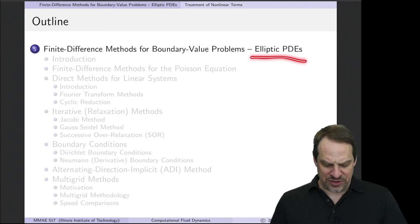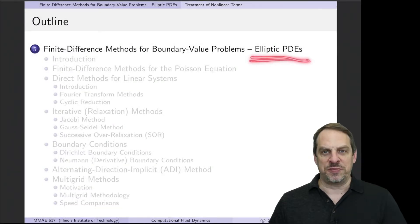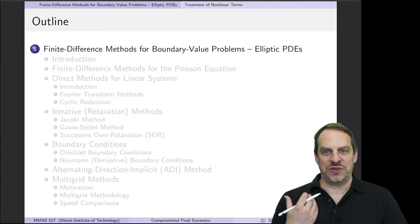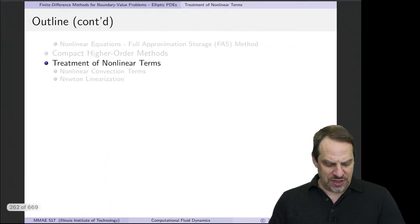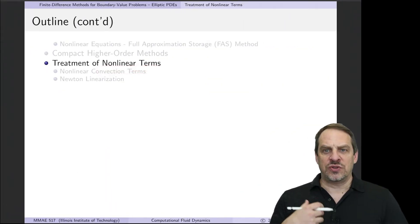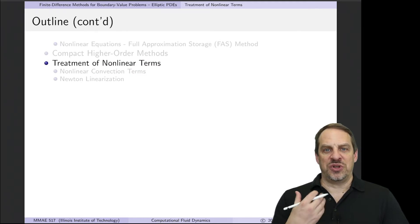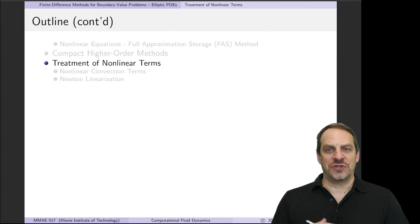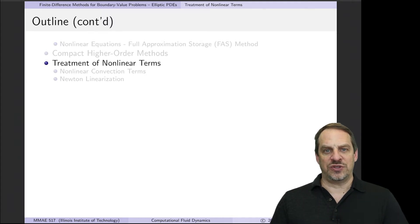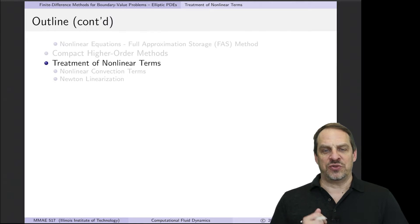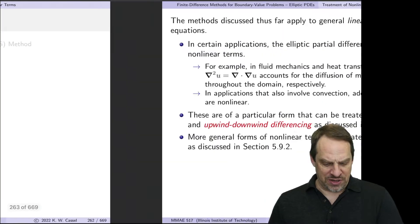We have one last topic in our discussion of how to solve elliptic PDEs using finite difference methods, and that is how do we treat nonlinear terms? So far we've been looking at the Poisson equation and Laplace equation, which are both linear, developing direct and iterative methods for solving such elliptic equations. But in many cases our equations are nonlinear, so we want to look at two methods for how to treat those nonlinearities.